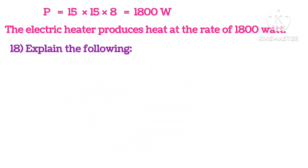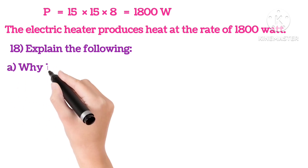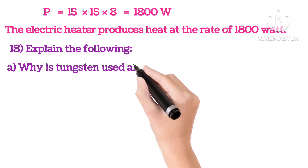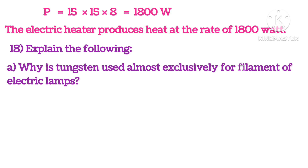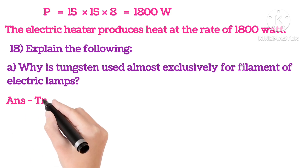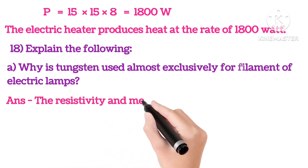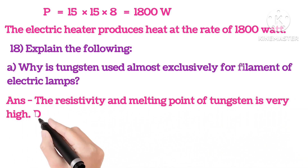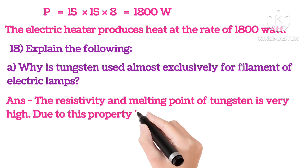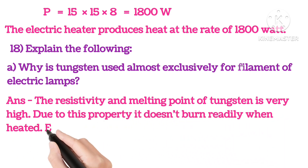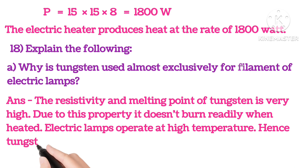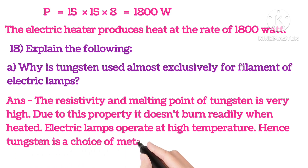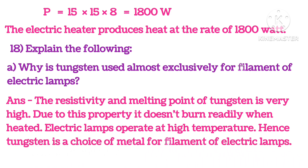18th: explain the following. Why is tungsten used almost exclusively for filament of electric lamps? Answer is: the resistivity and the melting point of tungsten is very high. Due to this property, it doesn't burn rightly when heated. Electric lamps operate at high temperature. Hence, tungsten is a choice of metal for filament of electric lamps.